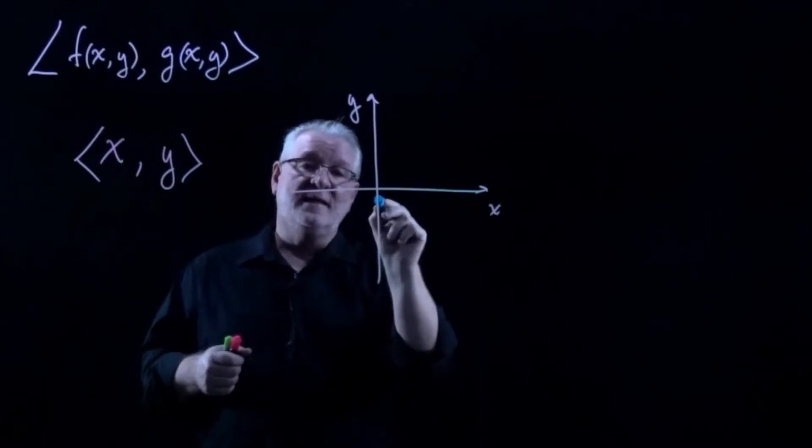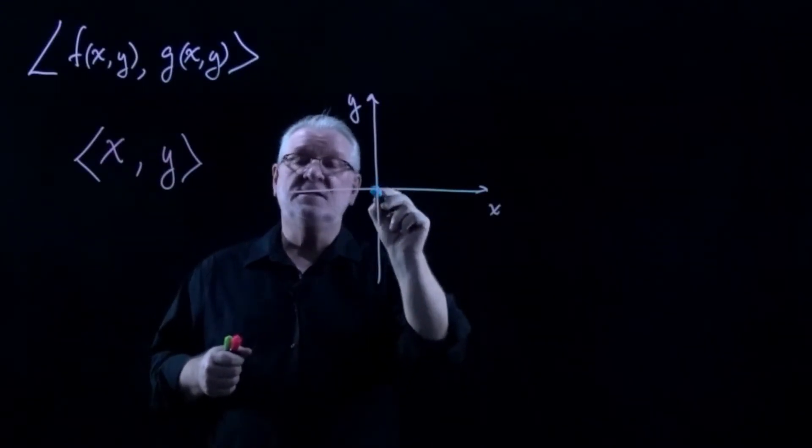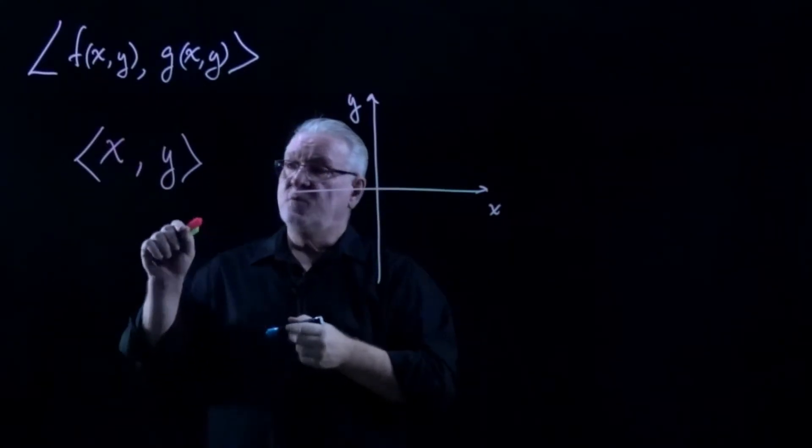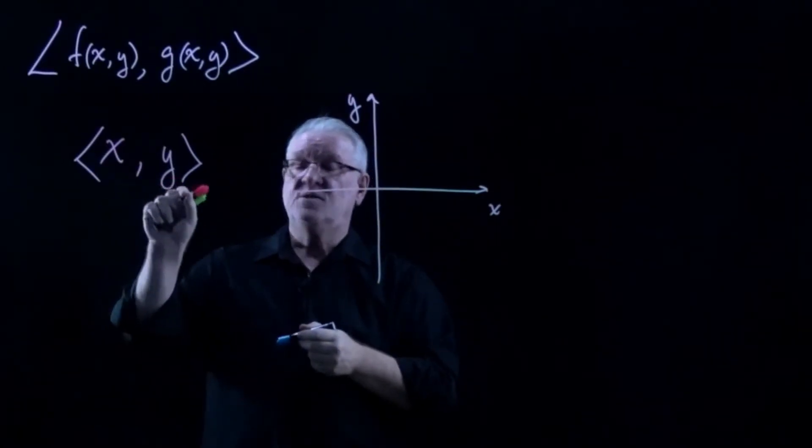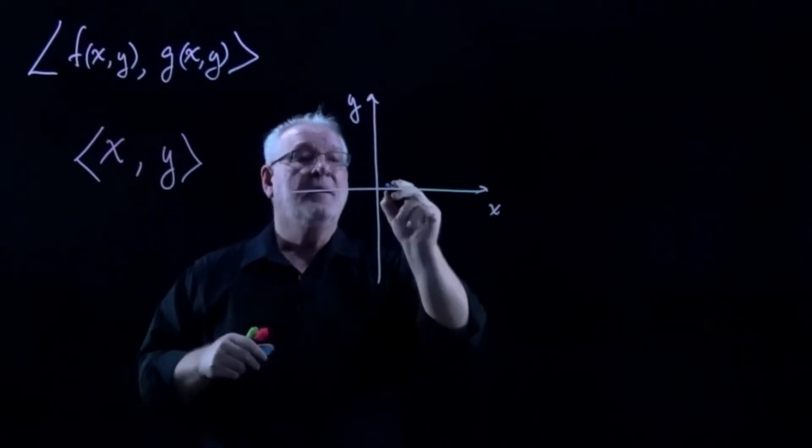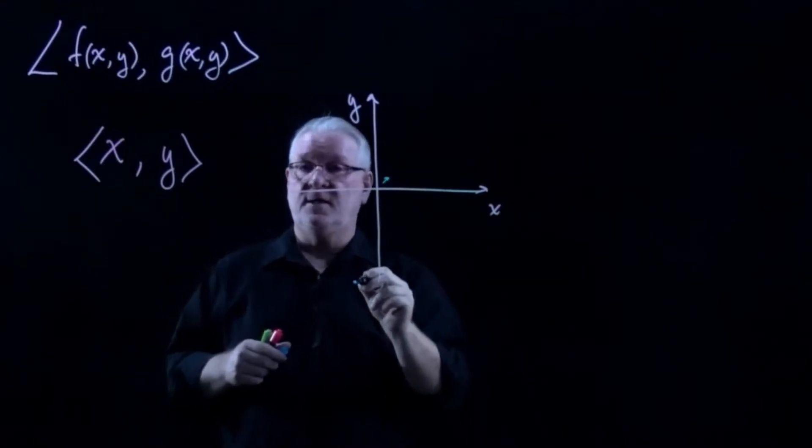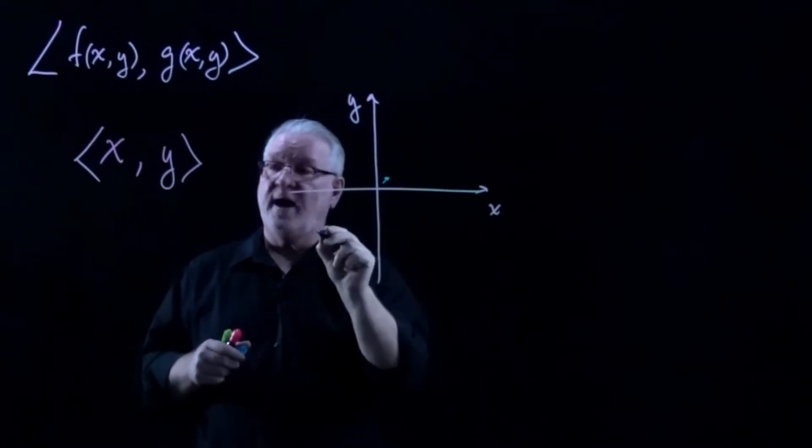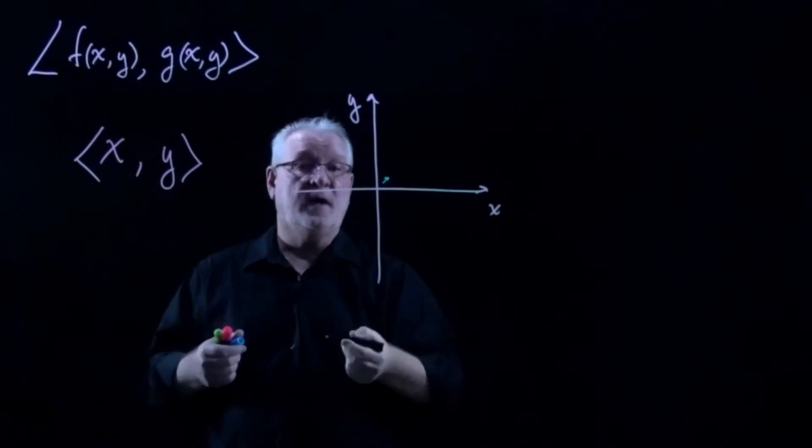But if we move slightly off of the origin, say into the first quadrant, then of course we're going to get a vector (x,y) that's at location (x,y), very close to the origin. But it will in fact have a very small magnitude, because the coordinates for x and y close to the origin are rather small.